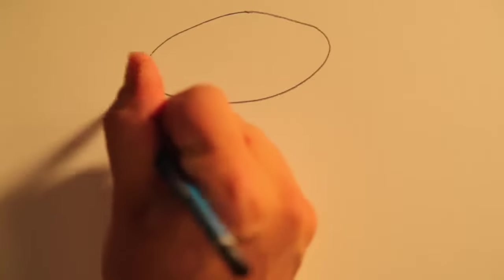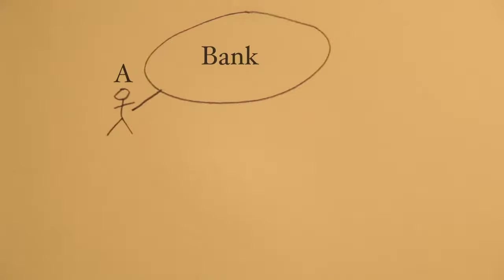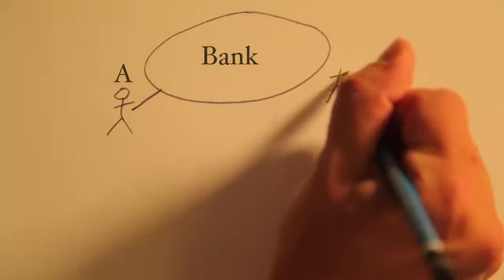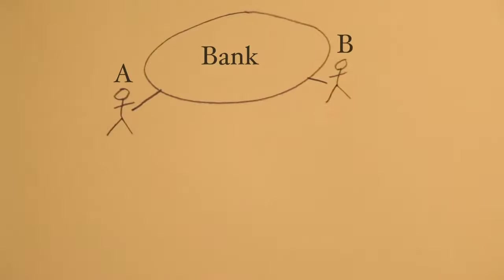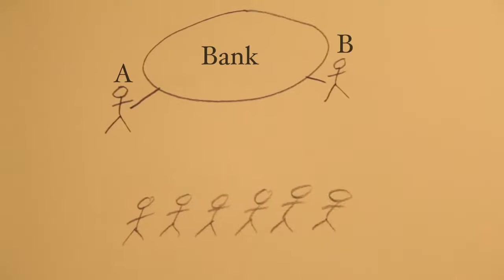Before Bitcoin, the only way to make electronic payments over the internet was to call your bank or a company connected to your bank and ask them to move the money to the other person. However, over 2 billion people in the world don't even have access to a bank account, so you simply cannot send money to them.